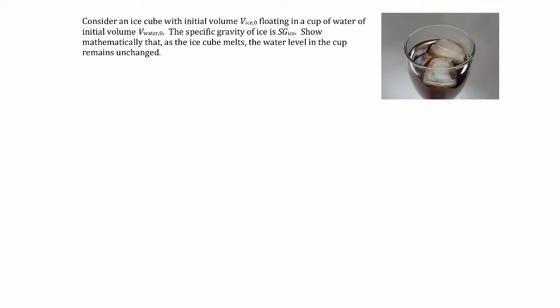In this example, we're told that we have an ice cube with some initial volume, and it's floating in a cup of water — the picture actually shows it floating in a cup of soda, but it's close enough. We're told that the volume of the water in the cup is given, and we're also given the specific gravity of the ice, which is a little bit different than the specific gravity of water. We want to show mathematically that if the ice cube melts, the water level in the cup remains unchanged — that the height of the free surface stays the same as the ice melts.